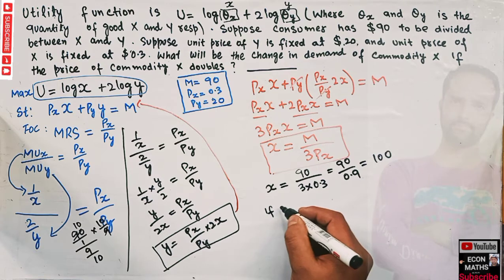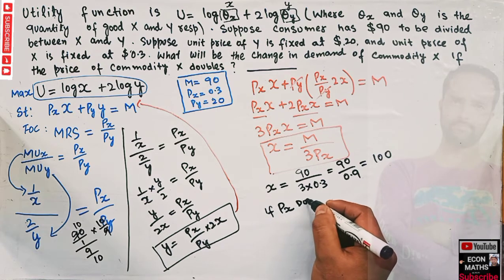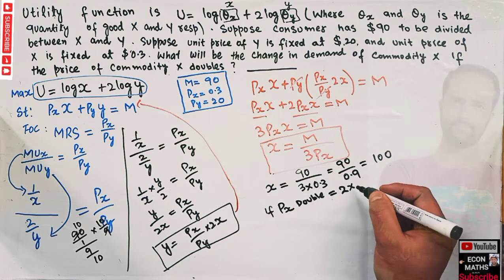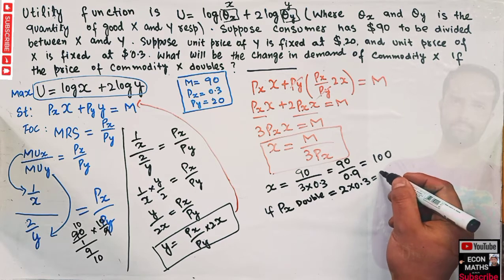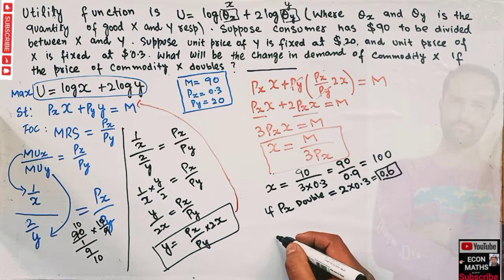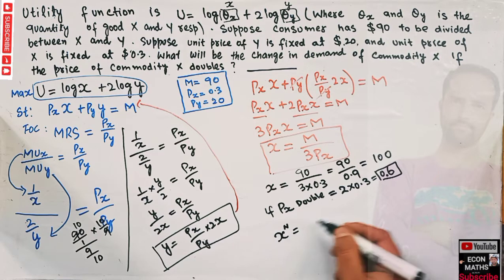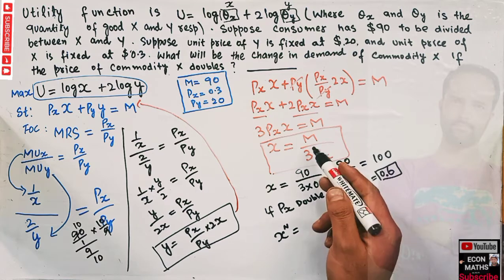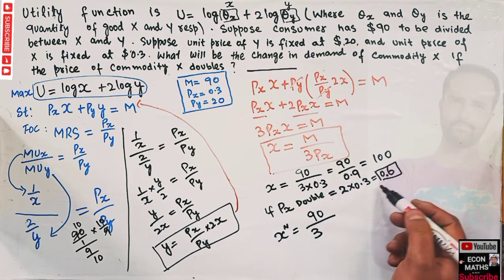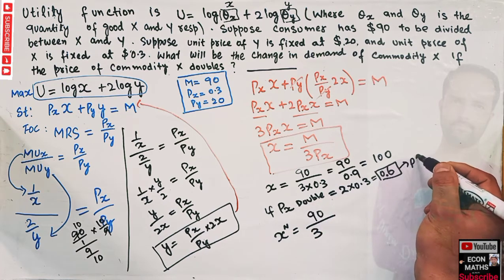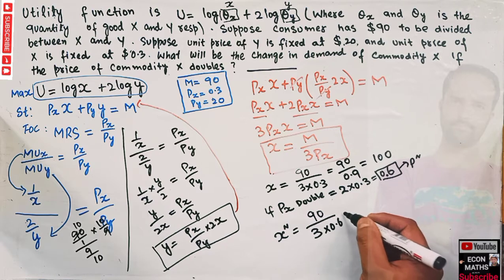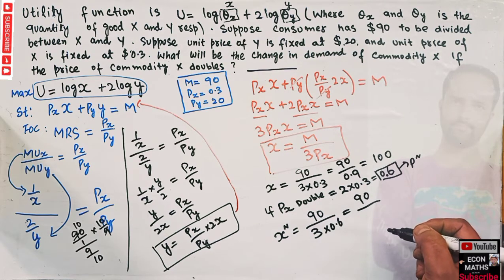Now we are told the price of X doubles. The new price of X is 2 × 0.3 = 0.6. The new quantity demanded at the new price is X_new = M / (3 × Pnew) = 90 / (3 × 0.6).